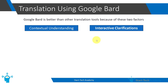The second reason is interactive clarifications. This means that once a translation has been generated, if you feel that Google Bard has misinterpreted or misunderstood some part of the text, you can give it clarifications by further prompting. Google Bard will understand the new input and redo the translation to accommodate the new information. In this way, Google Bard can improve on its own translation abilities.